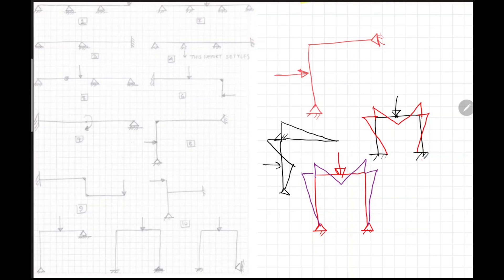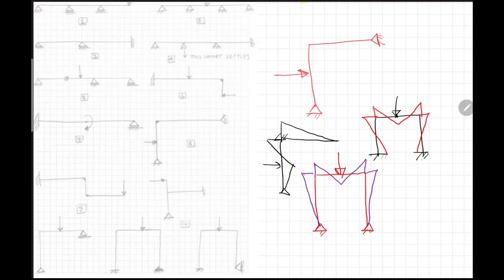And always remember - for fixed, the moment transfer to the other end is half. So now if we have instead of fixed a pin support, then for this case, bending moment diagram becomes like this, like this, like this. Now let's jump to the next question.